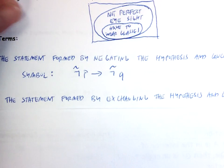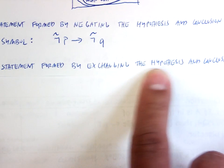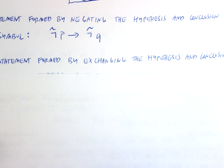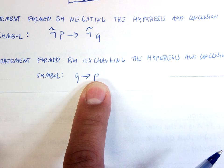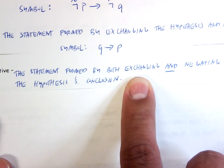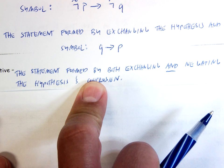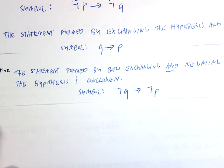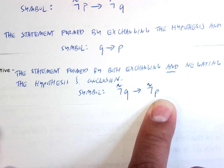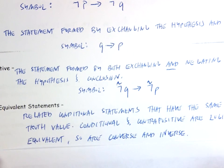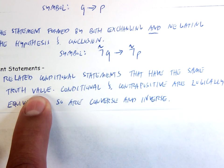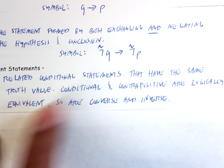The converse is the statement formed by exchanging the hypothesis and conclusion — we flip them. The conditional says 'if P, then Q'; the converse says 'if Q, then P.' The contrapositive is formed by both exchanging and negating: 'if not Q, then not P.' Logically equivalent statements have the same truth value — the conditional and contrapositive are logically equivalent, and so are the converse and inverse.